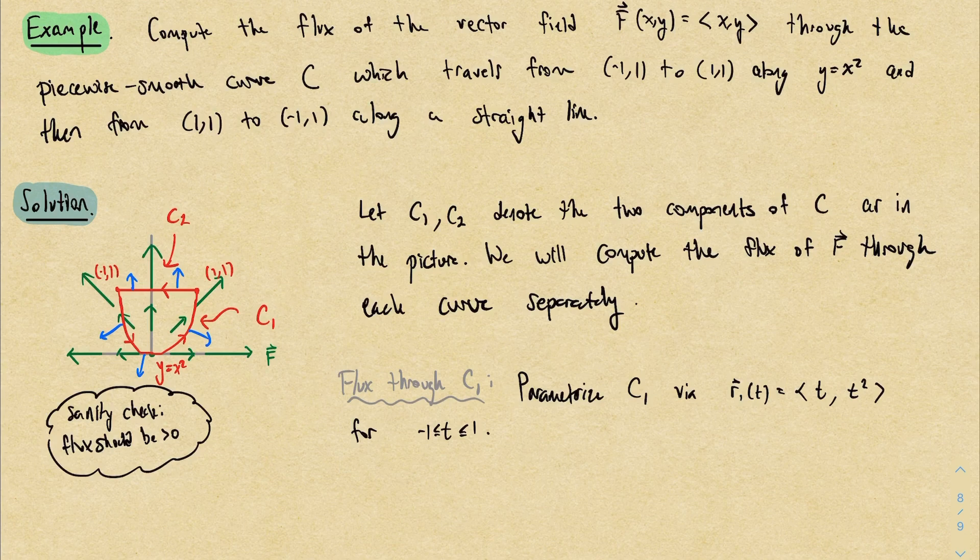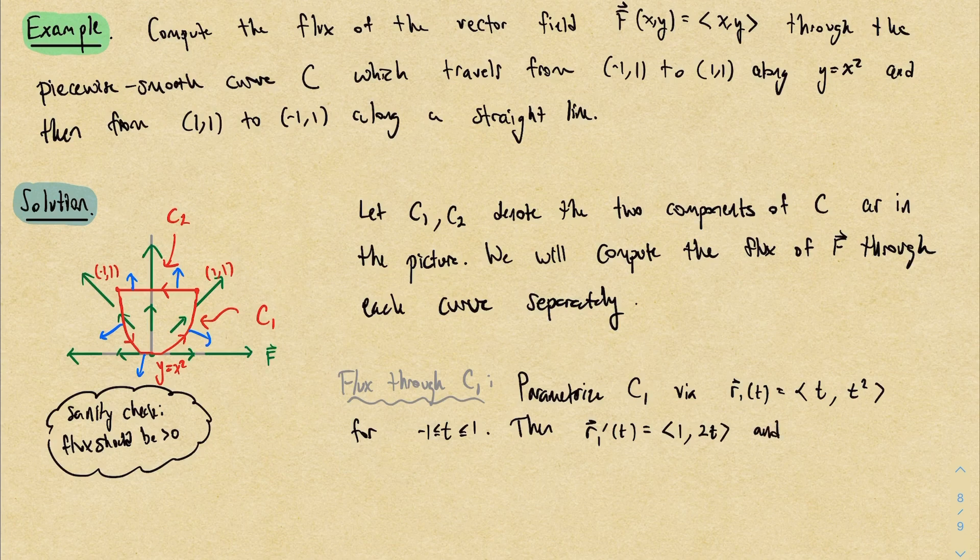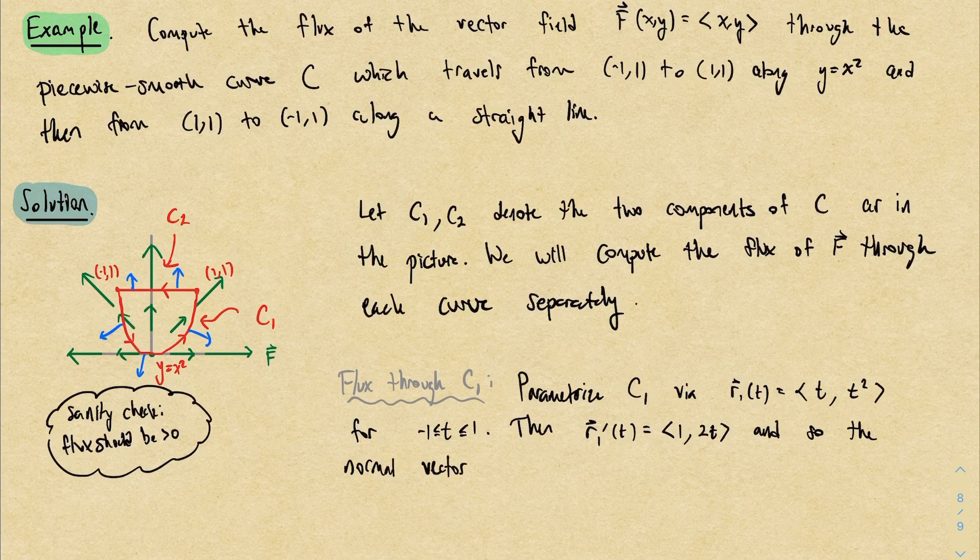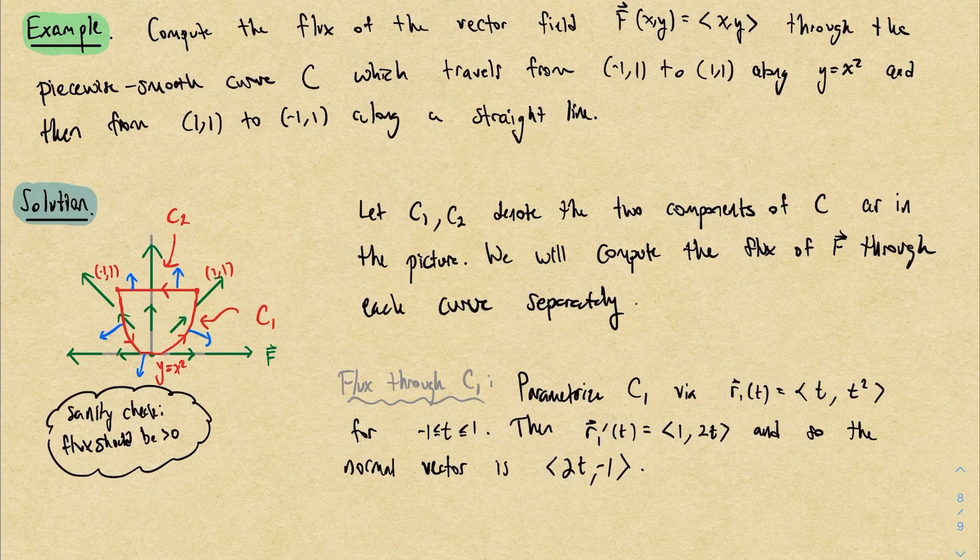Now we need the normal vector. Well, r₁' is (1, 2t). So based on what we talked about before, to get a normal vector, we can switch the order of the components, and then add a negative sign in the new second component to get the vector (2t, -1). And this should make sense geometrically if you look at the picture. On the x² component, all of the normal vectors are pointing down. In other words, the y component of all of those normal vectors should be negative, and in fact it is.